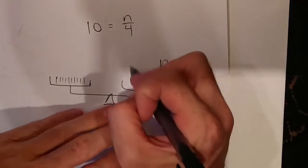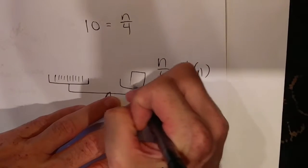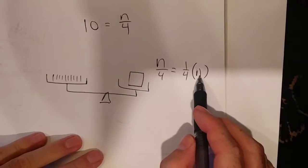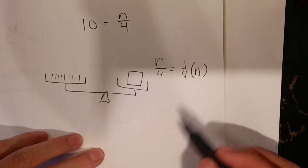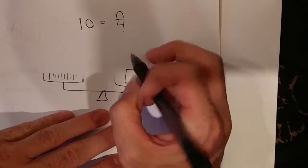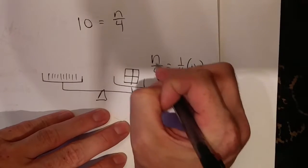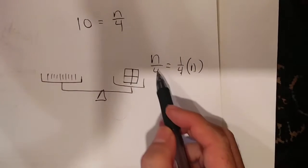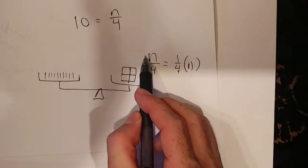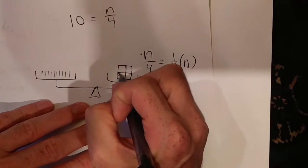On the right side I have n, but do I have a full n? No I don't have a full n, I have a quarter of it. Or if this is my n, it is divided into fourths. How many of the fourths do I have? I have one fourth of this, so I have this one fourth here.